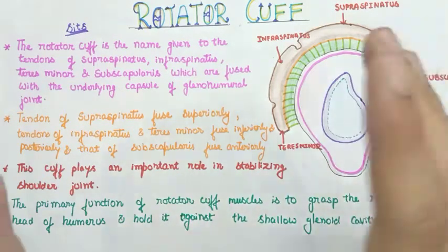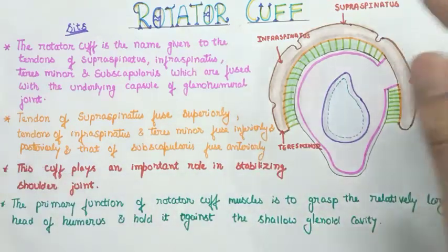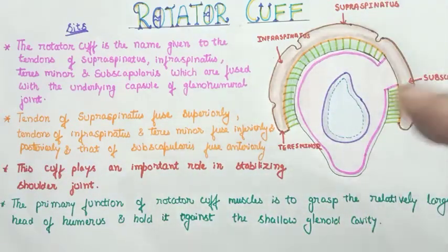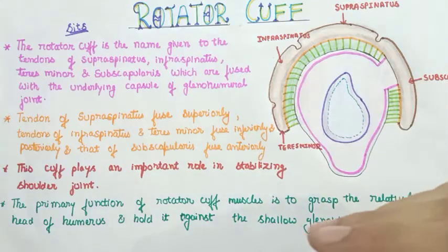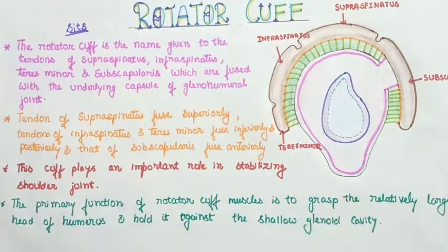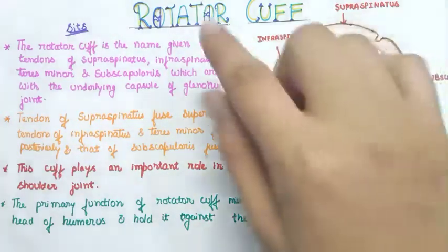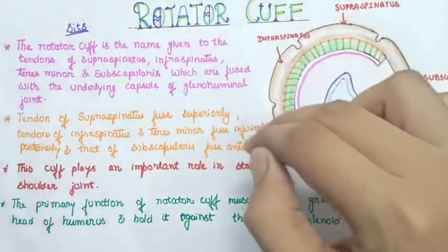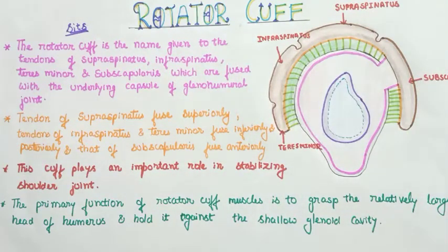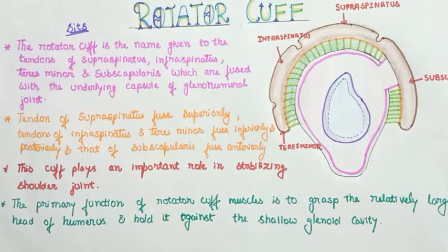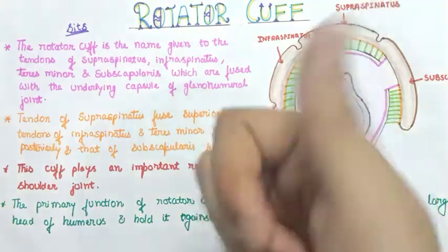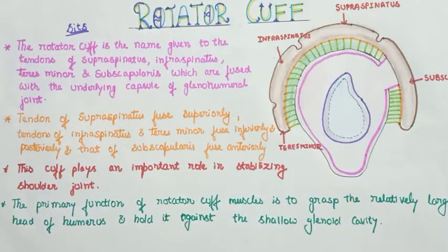One important clinical point: sometimes there is a tear of the rotator cuff. This happens when you fall on an outstretched hand or there is a sudden jerk or force on the shoulder joint. The fused tendons of these muscles can tear, which will lead to instability of the shoulder joint or dislocation of the head of the humerus. This was all about the rotator cuff. Remember — always write SITS in small letters. Thanks for watching!